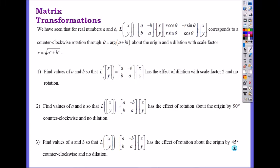We've seen that for real numbers a and b, we have a, b, negative b times x, y, which is the same as r cosine theta, r sine theta, and r sine theta negative, times x and y. It should be r there. This corresponds to a clockwise rotation through theta and dilation with scale factor square root of a squared plus b squared, which is r. That just summarizes what we just did.